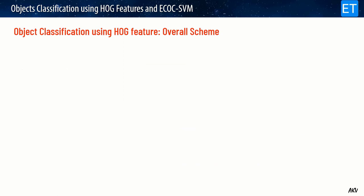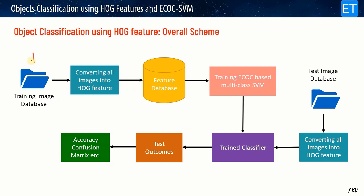Let's see the overall proposed scheme. All training images from the training database folder are first converted into their corresponding HOG features, which are stored in a feature database. This feature database is used to train the ECOC-based multi-class SVM classifier. Once training is finished we get a trained classifier. To test its performance, test images are first converted into their HOG features and given to the trained classifier, which classifies them. From the outcomes we can compute accuracy and plot a confusion matrix.